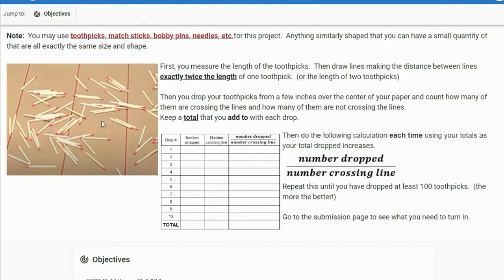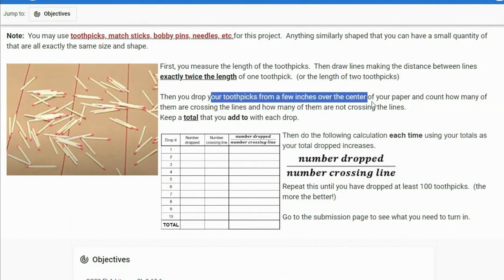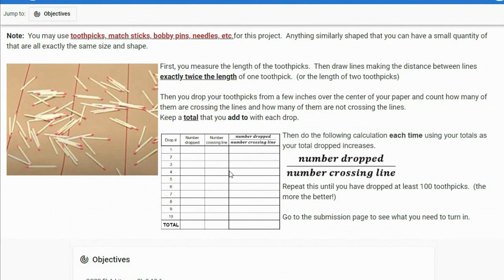What we do is you measure the length, like if we're using toothpicks, and then we're going to draw lines that are twice the length of that. The length of two toothpicks. Then we're going to drop the toothpicks over the paper and count how many of them are on the line, and then we're going to create like a spreadsheet or something. You can do this on paper. And then we're going to calculate the number dropped divided by the number crossing the line.